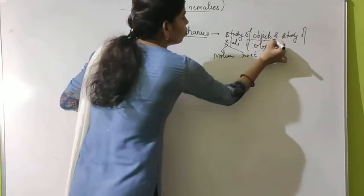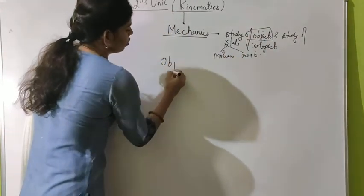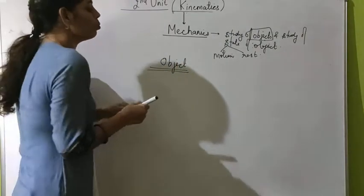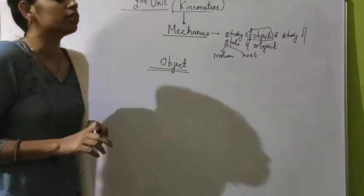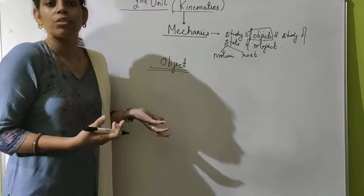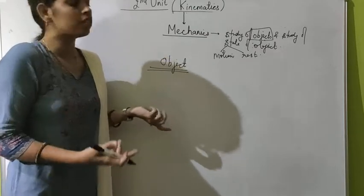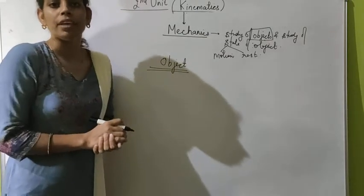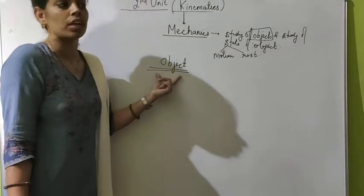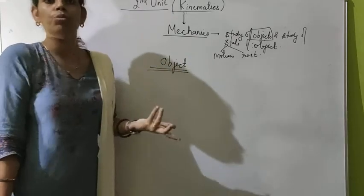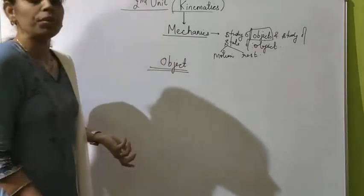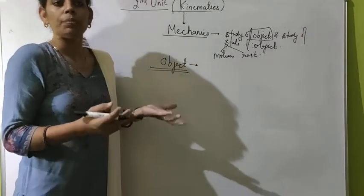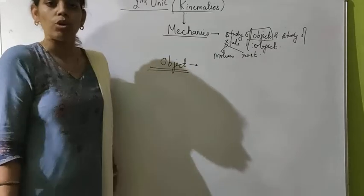We have come across another word, that is 'object'. What is an object? An object is anything having mass, volume, shape, size, and structure — that is known as an object.